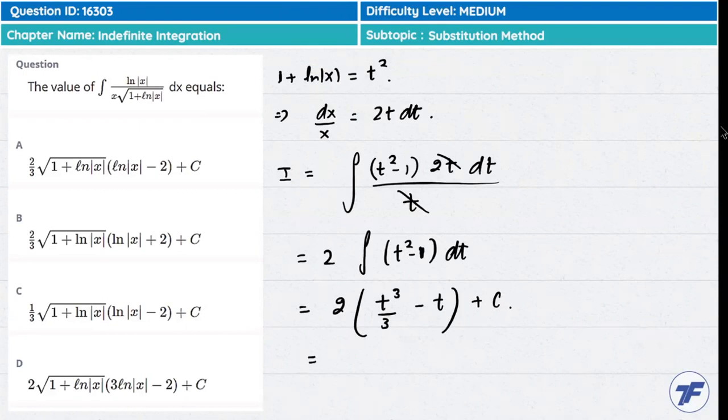So two-thirds of t³ - for two-thirds of t³, substitute the value: t is the square root of 1 plus ln(x). So as a result, two-thirds of...